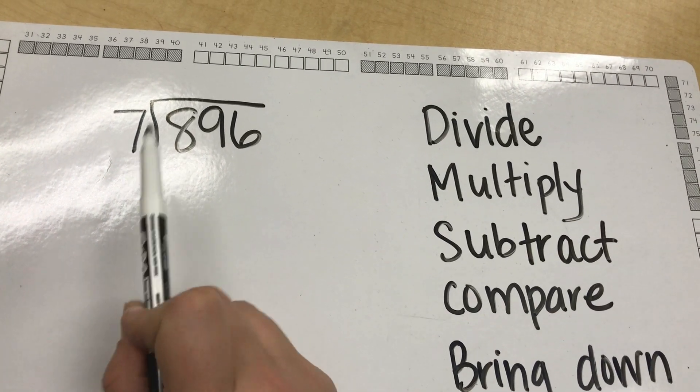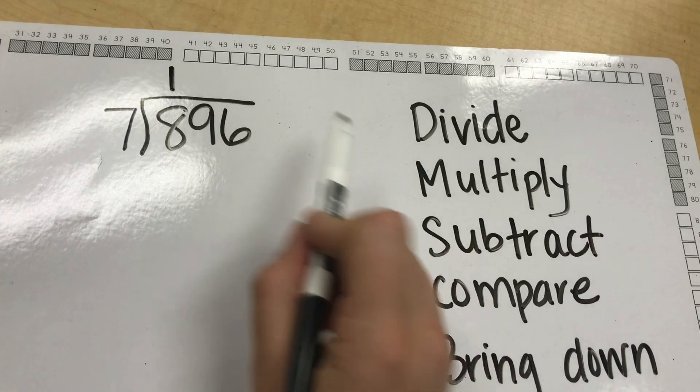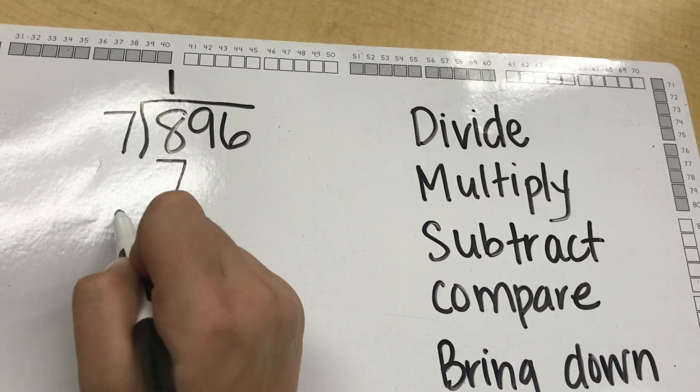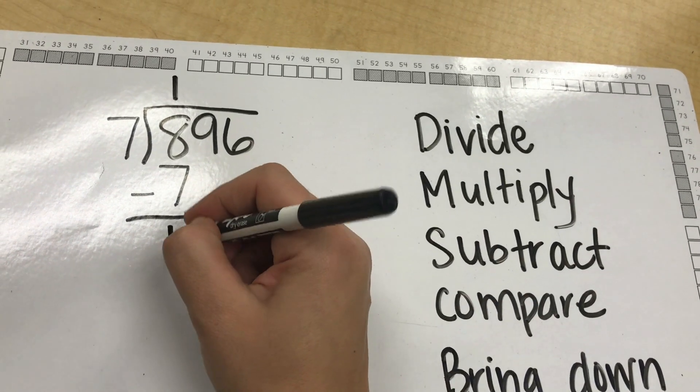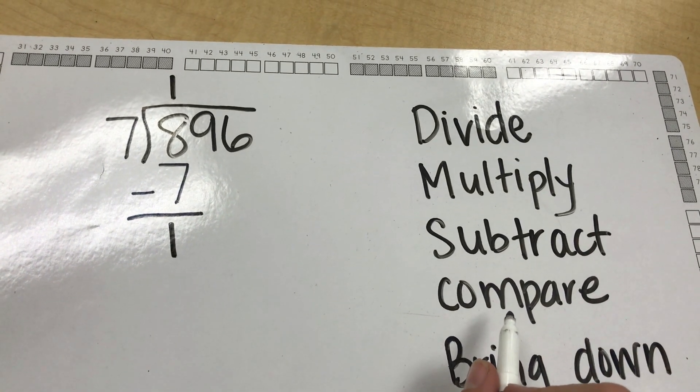I can divide 8 by 7 only one time. 1 multiplied by 7, our second step, is 7. I now do my third step which is to subtract. When I am done subtracting I must go back to my steps and I see that I need to compare.